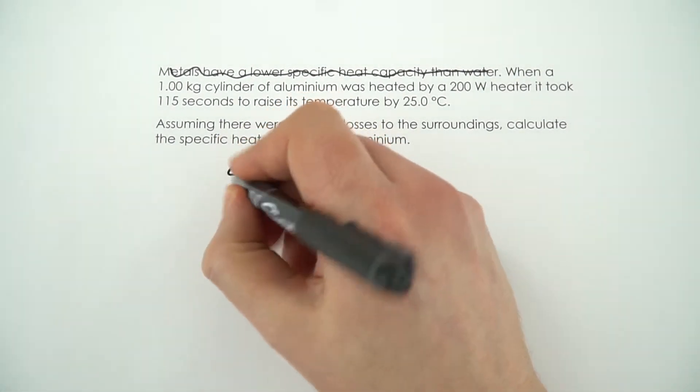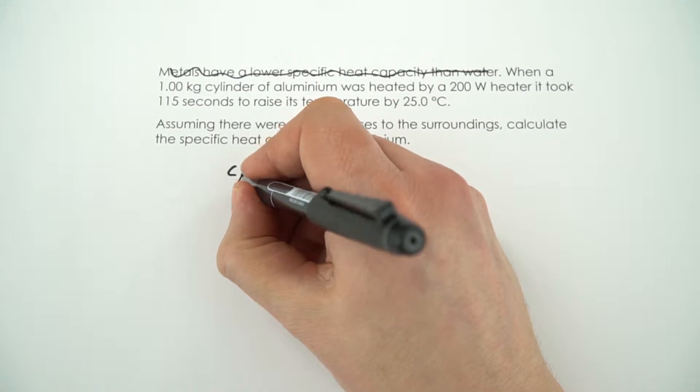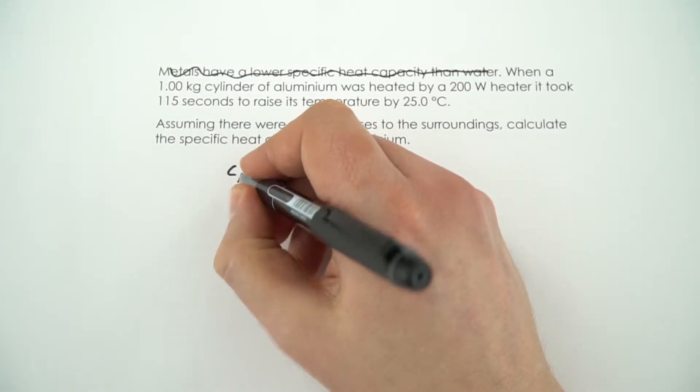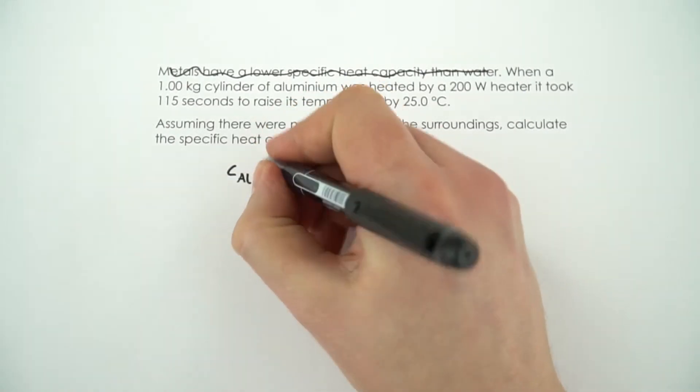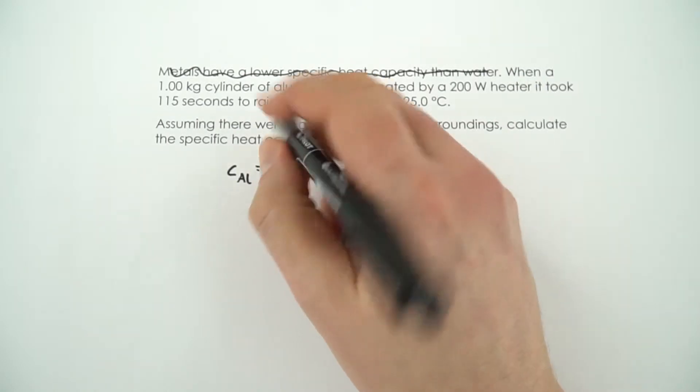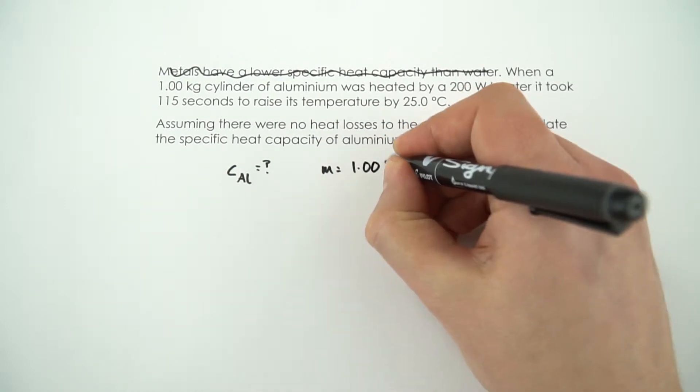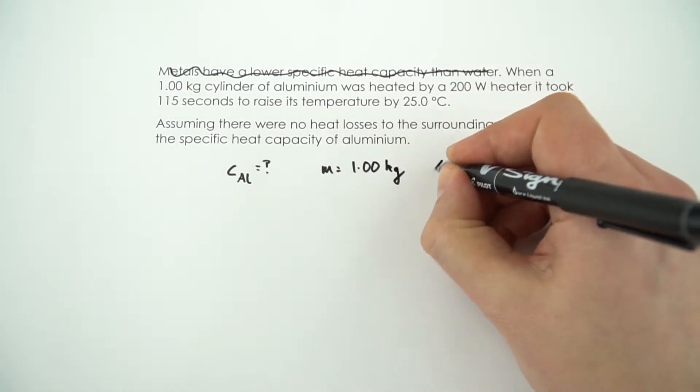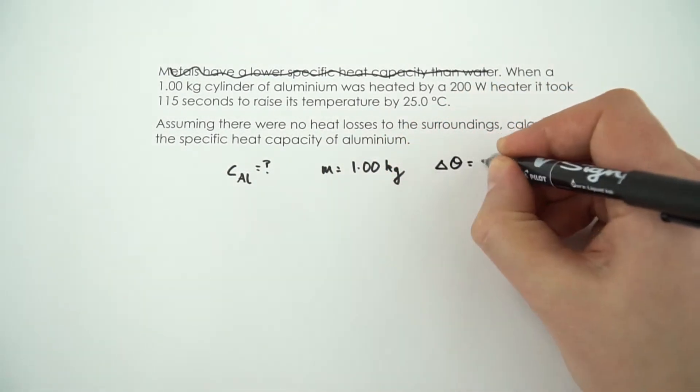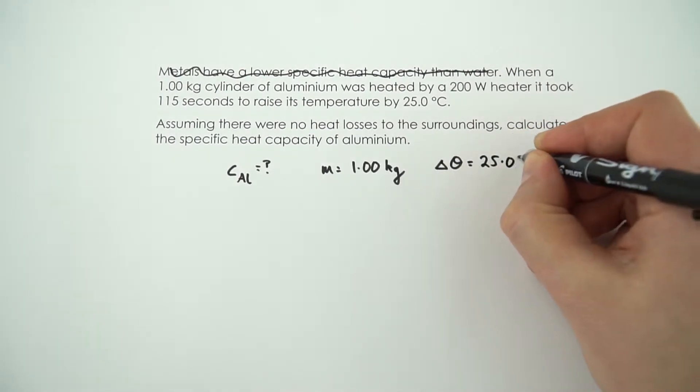So C is our specific heat capacity and Al just represents that this is the specific heat capacity of aluminum, and that's an unknown in this equation. But we do know the mass is equal to 1.00 kilograms, and we know that the change in temperature, delta theta, is equal to 25.0 degrees Celsius.